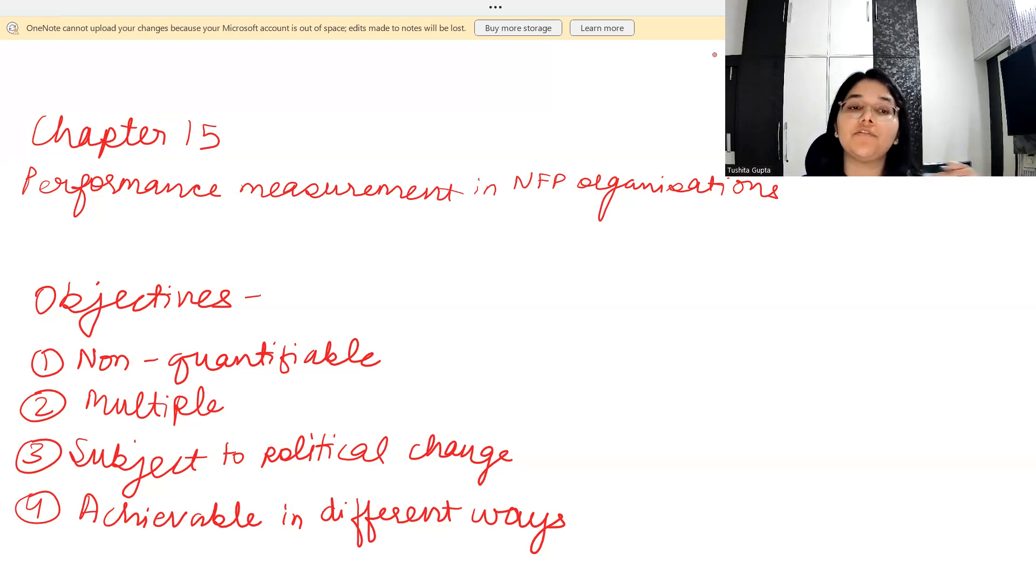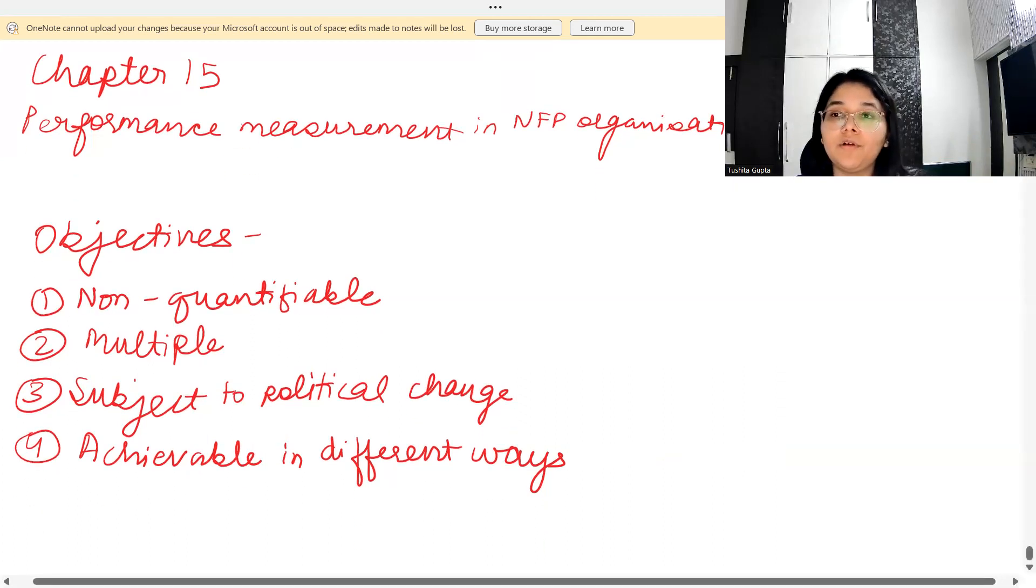Because they are achievable in different ways, there can be conflicts in how people think they will achieve those objectives. This is how the objectives of NFPs look like.